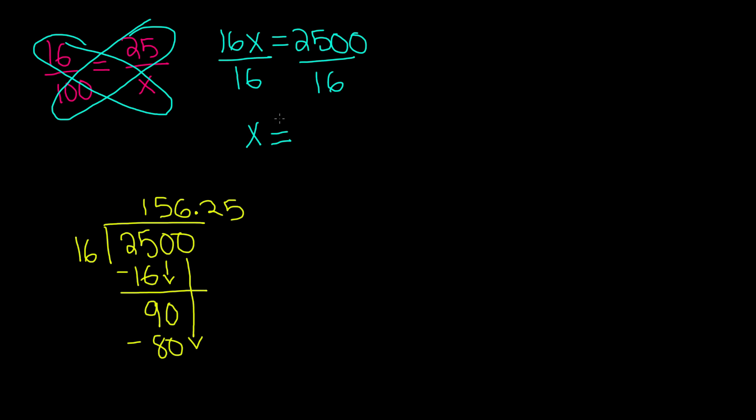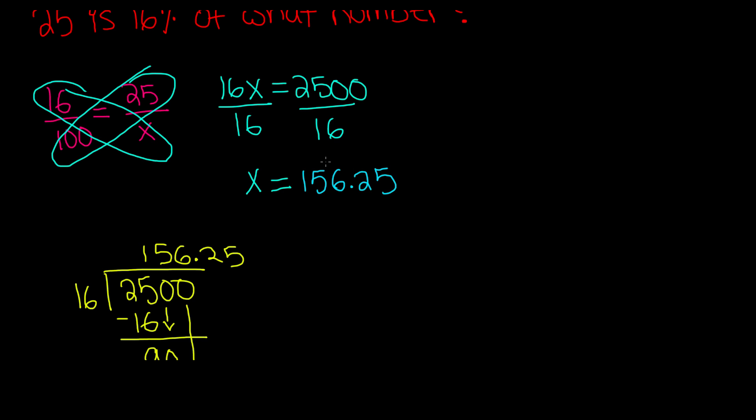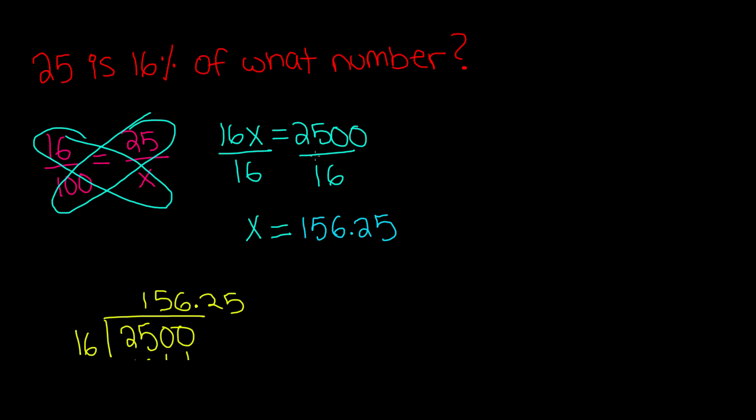That means x is equal to 156.25. So going back to our problem, 25 is 16% of 156.25. So that number doesn't exactly need to be an exact whole number. It could be a decimal number. But this is what's really called the second type of percent problem, which is finding the whole.